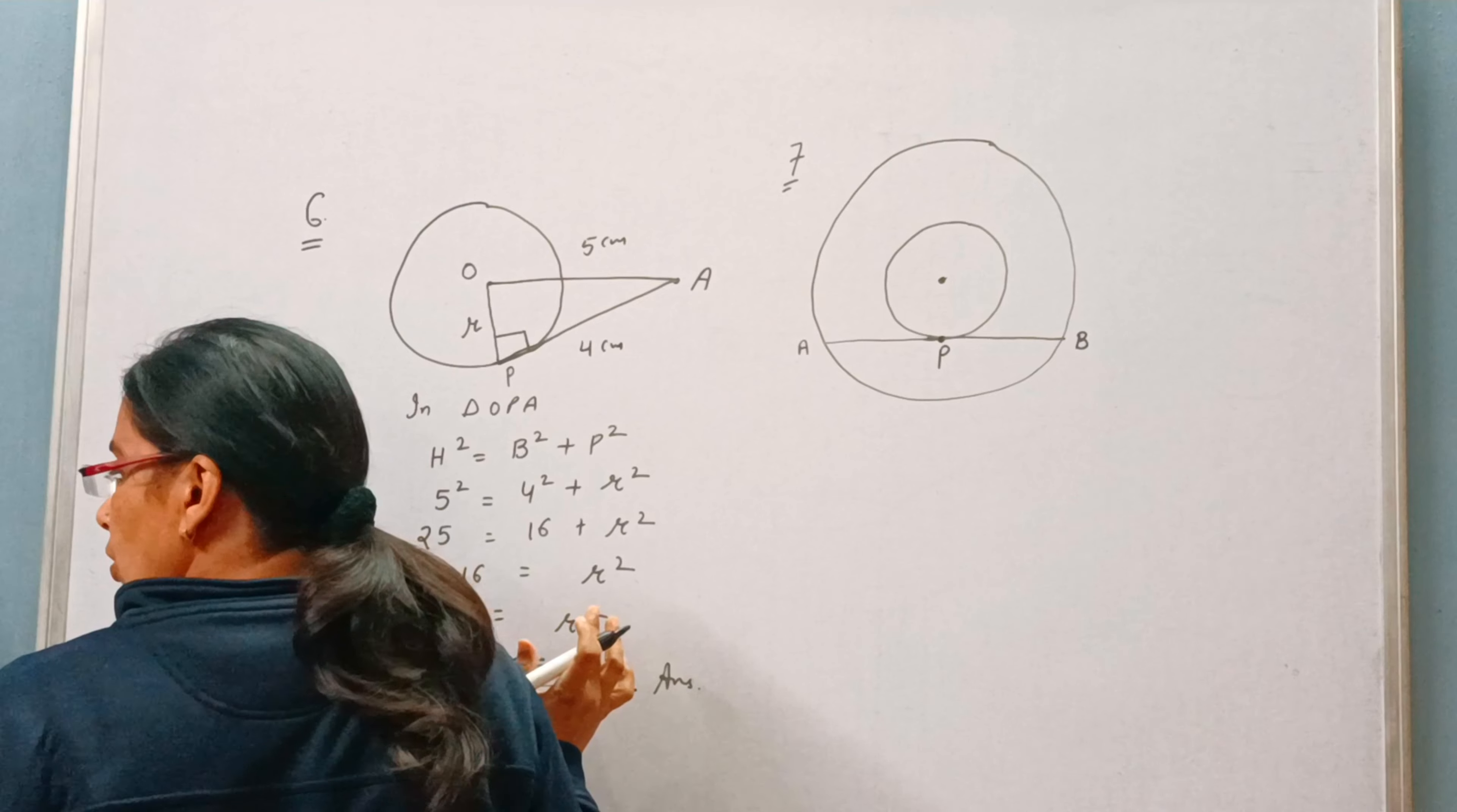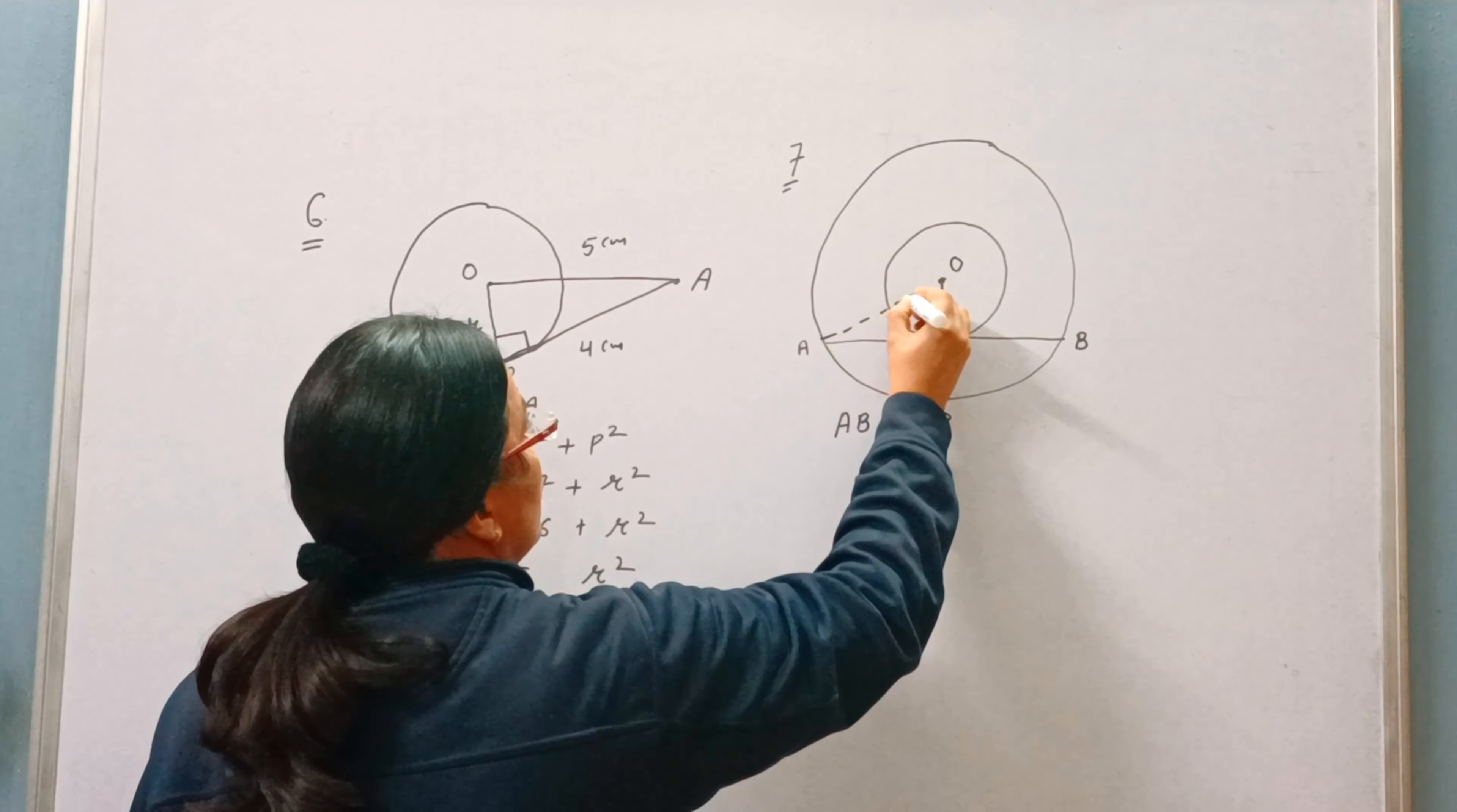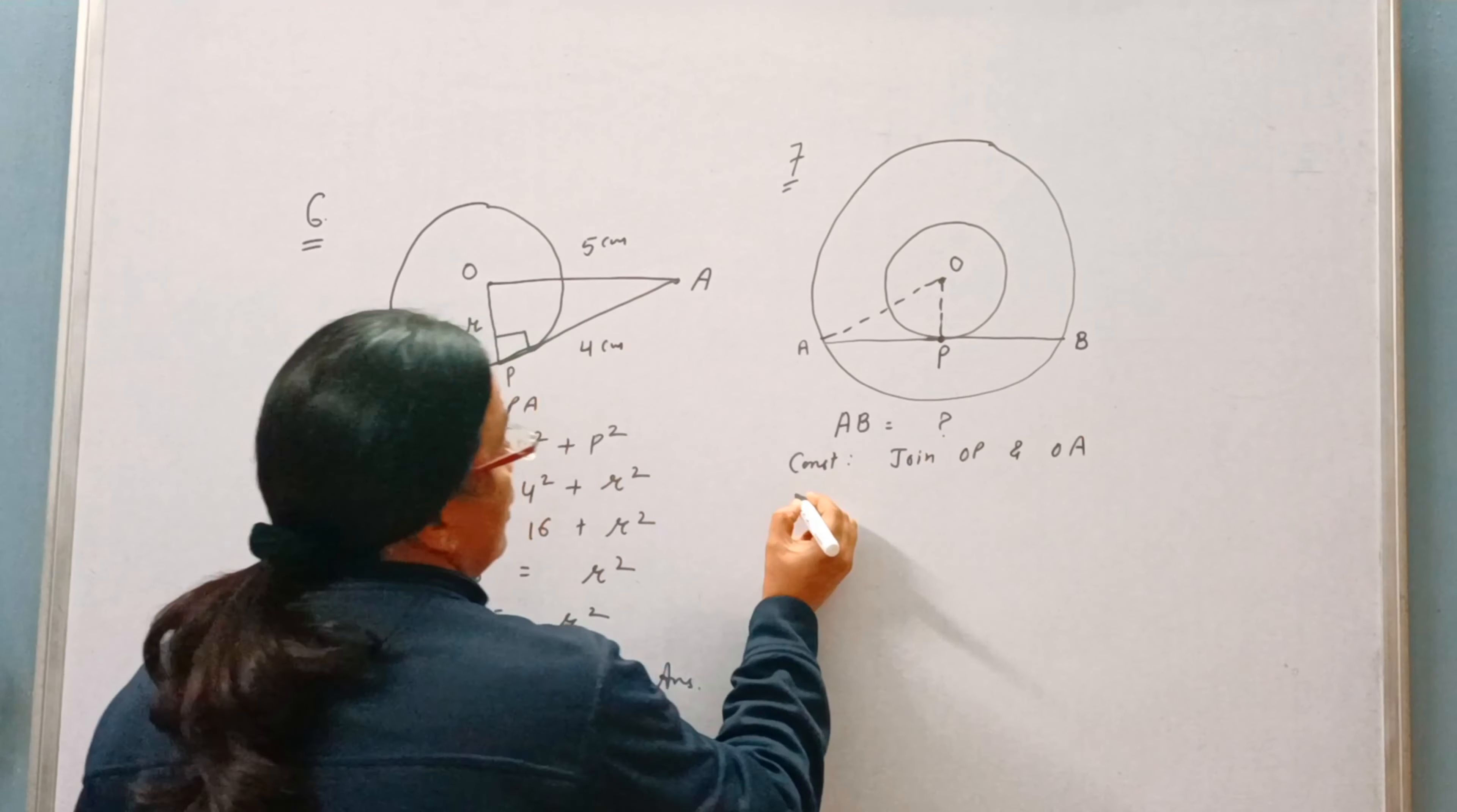Now we need to find the length of AB. For this, join OP and OA. So construction is join OP and OA. Now solution.